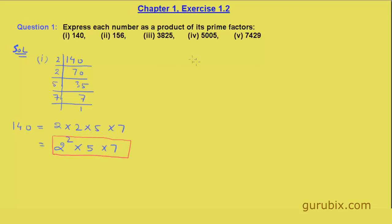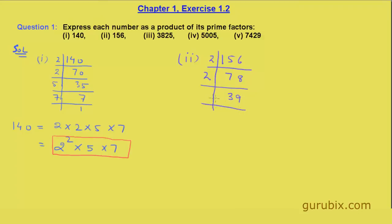Let us solve question number two, which is 156. Again the unit digit is even, so the number can be divided by 2. When we divide it by 2, we get 78 as quotient. Again the unit digit is even, so it will be divided by 2 and we get 39 as quotient.